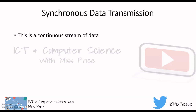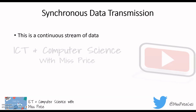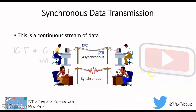Most of us these days listen to music on places like Spotify or Amazon — you listen to all this stuff online, and that is a continuous stream of data. Here's an example: asynchronous is like people sending emails to each other, whereas synchronous is a continuous stream of data that goes all the way through continuously.